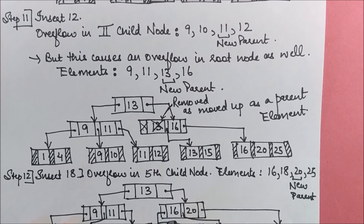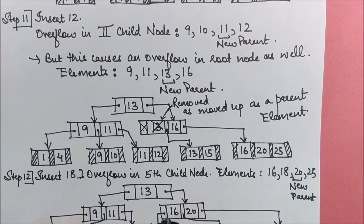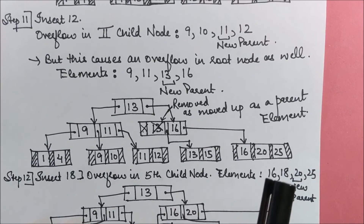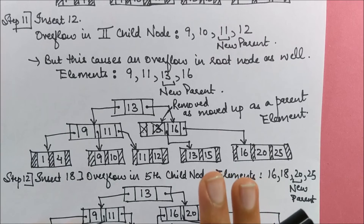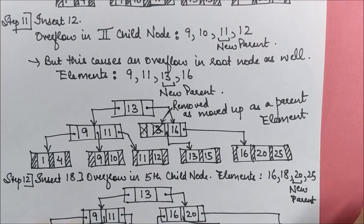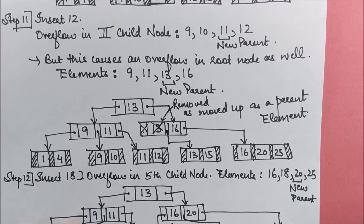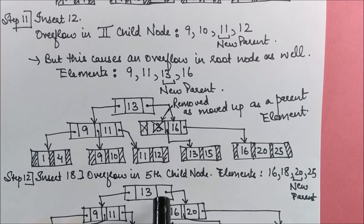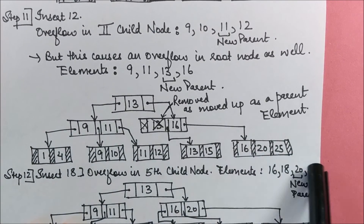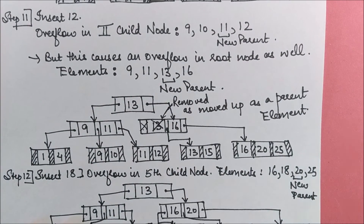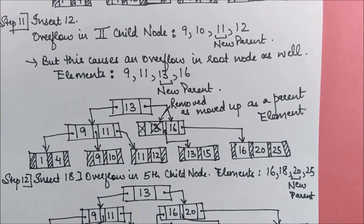An important point: all elements in the B+ tree must be present in the leaf nodes, but they should not repeat in any non-leaf node. However, if an element appears twice in the original input list, it will naturally appear twice in the leaf nodes and may also repeat in an internal node — that is expected.